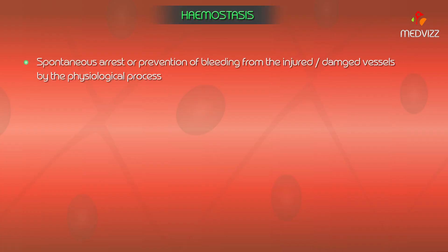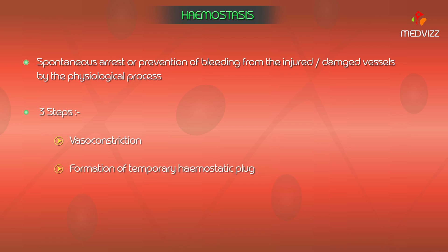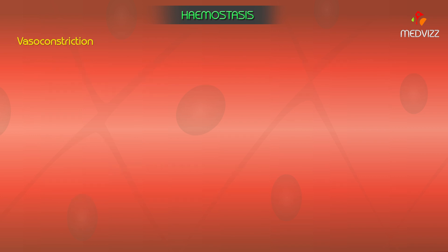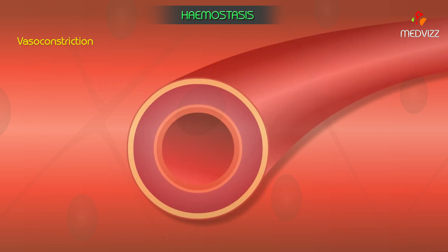Hemostasis refers to the spontaneous arrest or prevention of bleeding from injured or damaged vessels by physiological processes. It involves three main steps: vasoconstriction, formation of a temporary hemostatic plug, and formation of a definitive hemostatic clot.